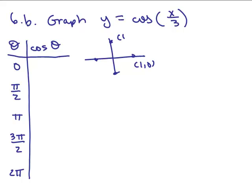0, 0, 1, negative 1, 0, 0, negative 1 and the cosine is always the X coordinate of those ordered pairs. So at 0 the cosine is 1, up at pi over 2 it's 0, over at pi we've got negative 1, 3 pi over 2 we're at 0 and at 2 pi we're at 1 again.